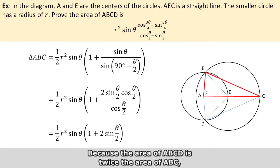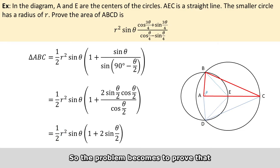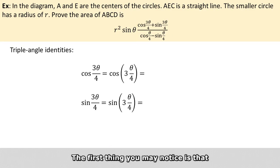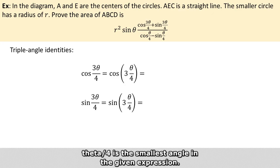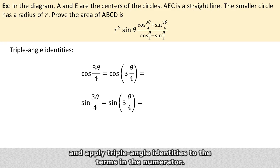Because the area of ABCD is twice the area of ABC, the factor of one half will be gone after multiplying by 2. So the problem now becomes to prove that the parenthesized term equals the fraction in the problem statement. The first thing to notice is that theta over 4 is the smallest angle in the given expression, so we can treat theta over 4 as a substitution variable and apply triple angle identities to the terms in the numerator first.